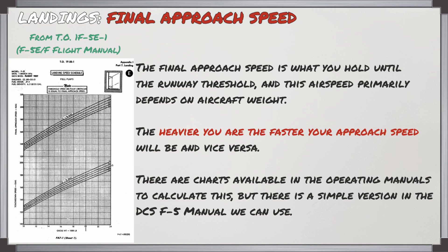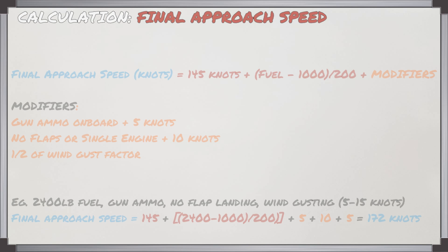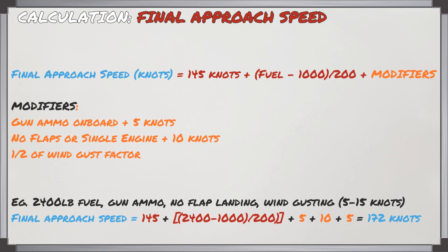There are charts in the operating manuals to calculate this, such as the one on the left, but there's a simple version in the official DCS manual for the F-5 which we can use. To calculate your final approach speed, you start with a basis of 145 knots, then include a fuel calculation, and modifiers such as gun ammunition, no flaps, a single engine landing, and half of the wind gust factor if there is one.